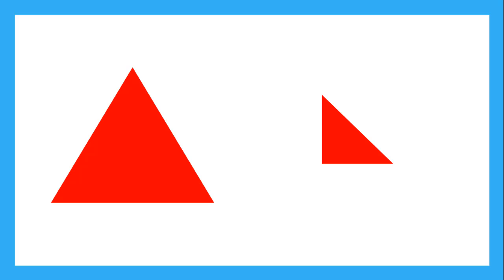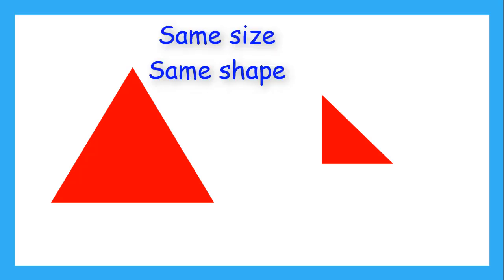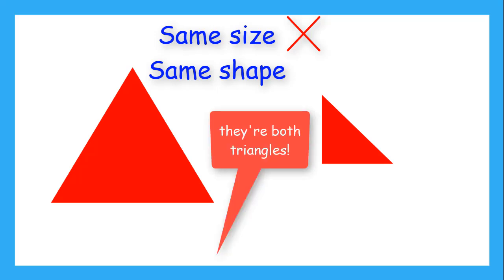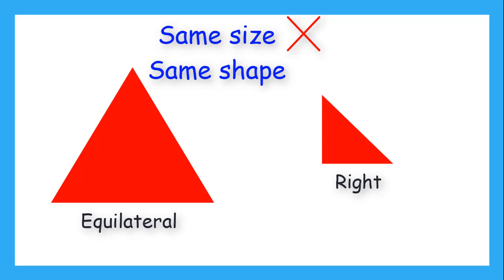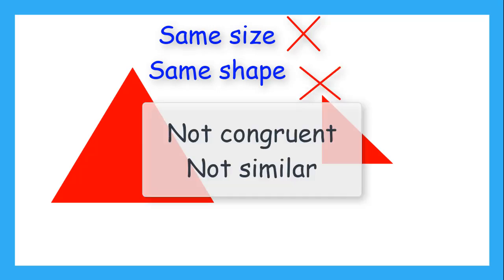What about these two triangles? Are they the same size? No. Are they the same shape? Well, they're both triangles, but the big one is an equilateral triangle, and the small one is a right triangle. So these aren't even the same shape. These two figures are not congruent, and they are not similar.